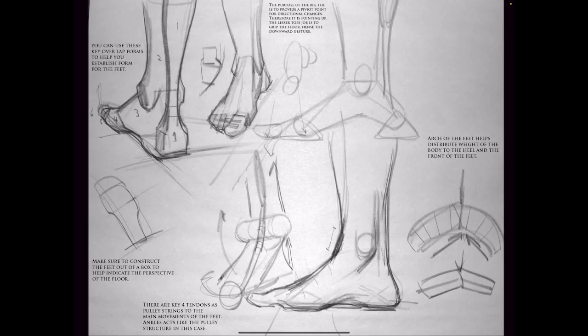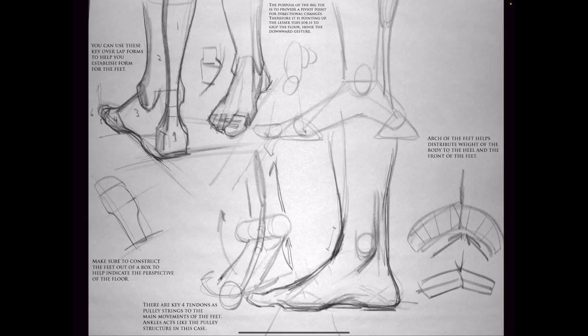I don't want you to just memorize the bones or the muscles. What I want you to understand is what is the shape we are looking at and how are these shapes broken into hierarchy. Our hierarchy is: tibia, ankle, ankle, triangle. That is my dominant hierarchy. When we get into the muscles, we're going to talk about those muscle groups.